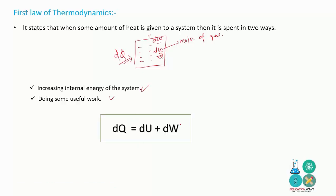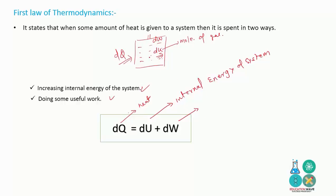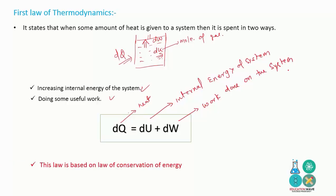The internal energy does useful work, giving us: dQ = dU + dW, where dQ is the amount of heat supplied to the system, dU is the internal energy of the system, and dW is the work done on the system. This law is based on the law of conservation of energy, which means energy can neither be created nor destroyed.